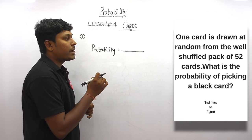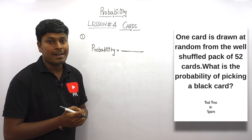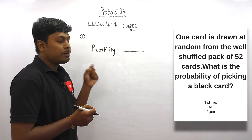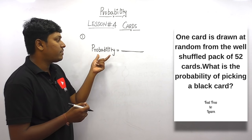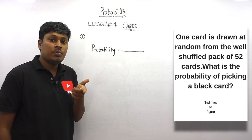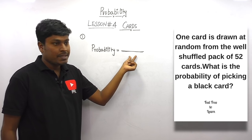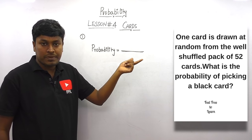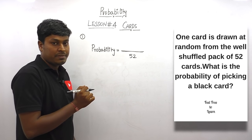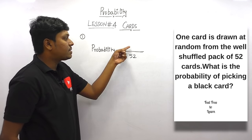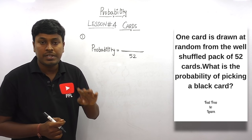Question number one: one card is drawn at random from a well-shuffled pack of 52 cards. What is the probability of picking a black color card? Our target is to pick one card out of 52, and that card should be black. The formula is: probability = number of favorable outcomes divided by total possible outcomes, and the total possibility is 52.